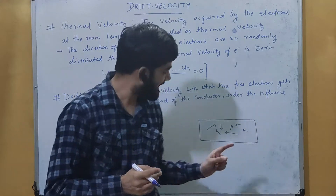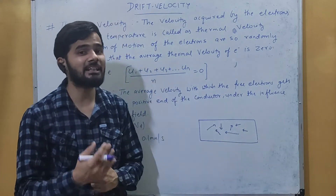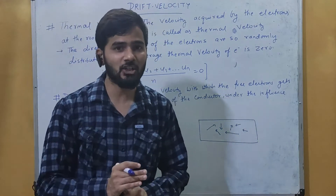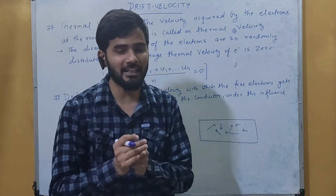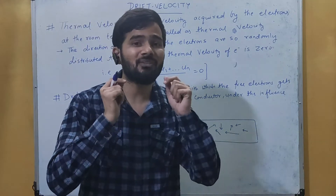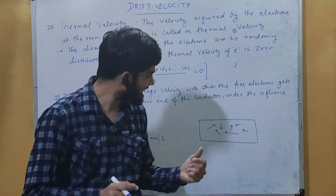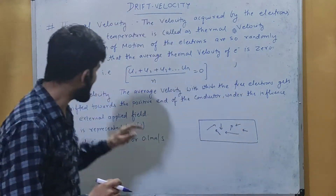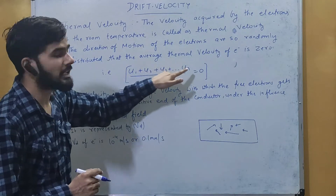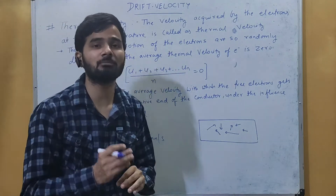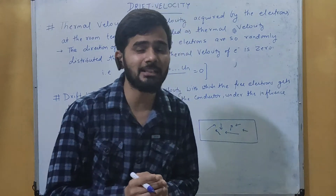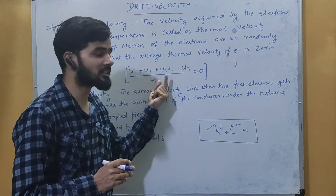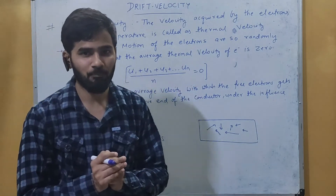This velocity is a vector quantity. Since all these velocity vectors point in different directions, we use vector addition. Because of this randomness, the average velocity of all these electrons equals zero. So if u1, u2, u3, up to un are the initial thermal velocities for the electrons, then the average thermal velocity equals zero — that is because of the randomness.